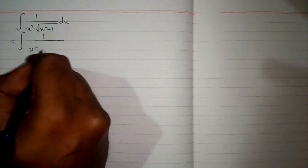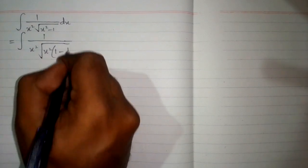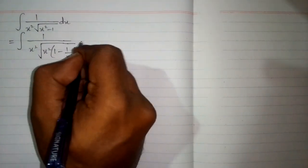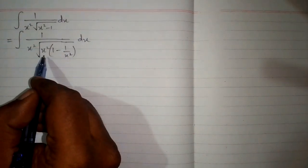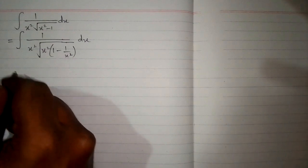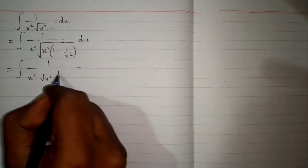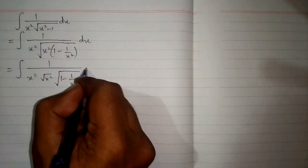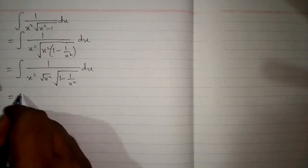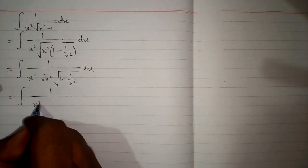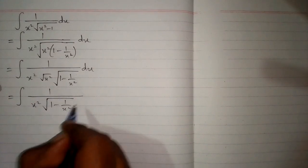First, we take x square common inside the square root, giving us 1 minus 1 upon x square. Applying square root on both factors, we get square root of x square multiplied by square root of 1 minus 1 upon x square. Since square root of x square is x, and x times x square is x cube, we have x cube multiplied by square root of 1 minus 1 upon x square in the denominator.